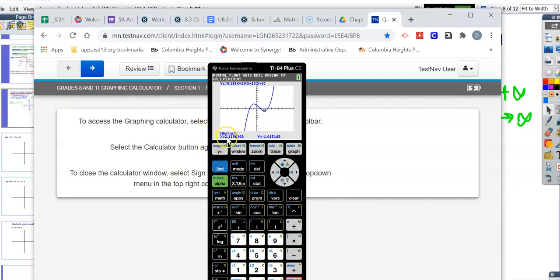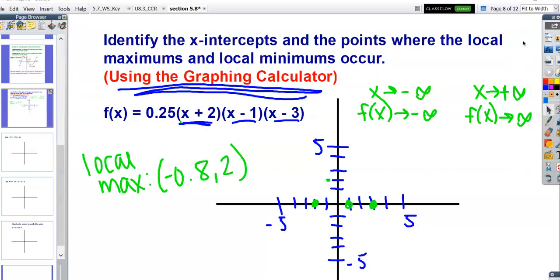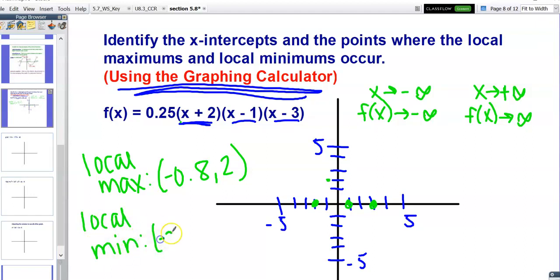Guess, and we have about the coordinate 2.1 and negative 1. Then you can plot that point.